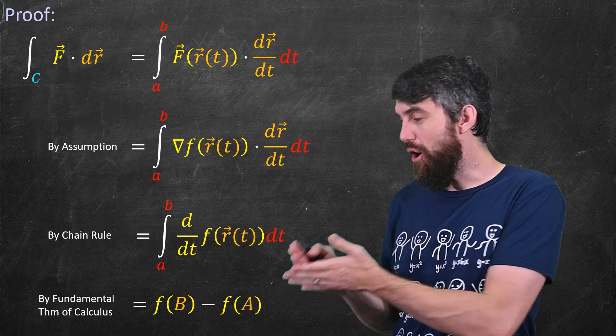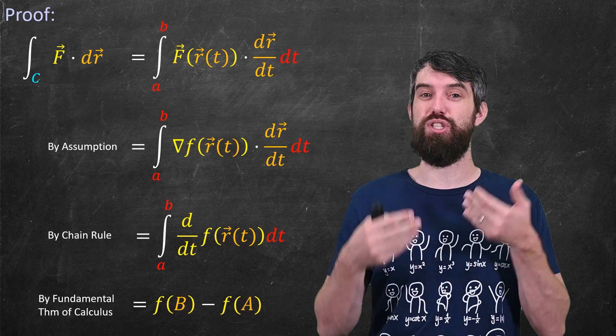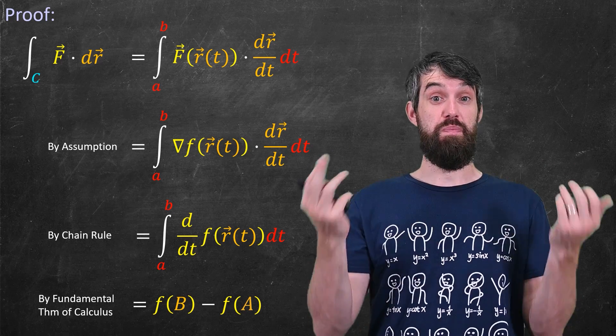And then I'll just rewrite instead of r of little b I'm just going to write big B and instead of r of little a I'm just going to write big A. And that's our proof.